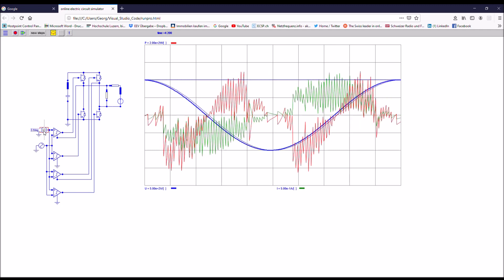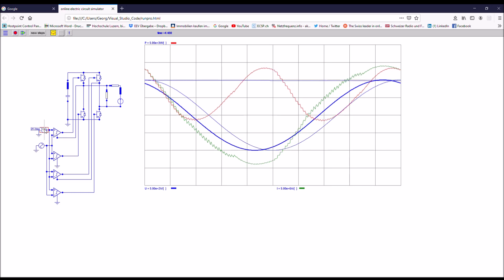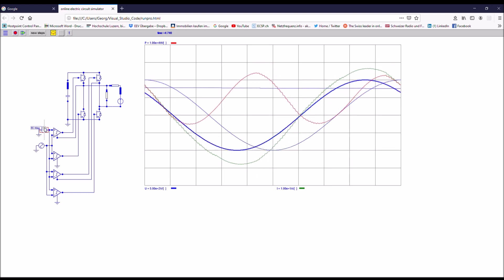And that is what happens now. I put in a lagging phase shift. So now the capacitor is discharged. Power is fed to the grid.